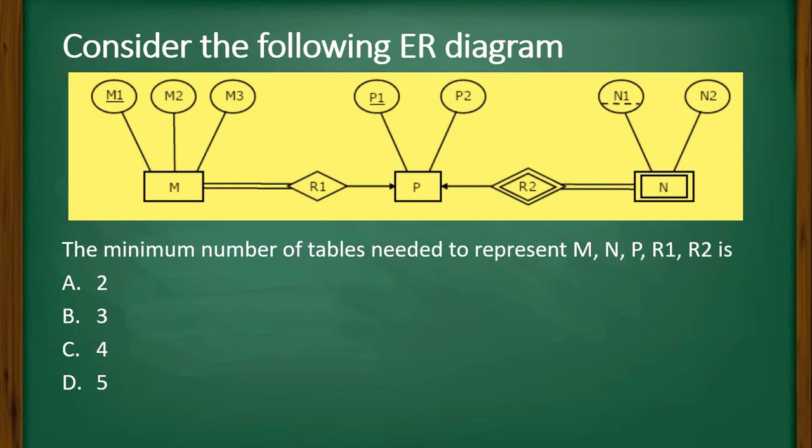Now look at the ER diagram given. Here you can see three entities are there: M, P, and N.